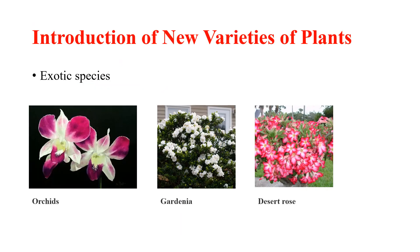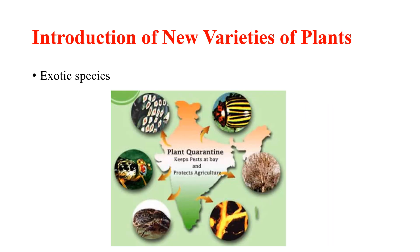The first step in plant breeding is introduction of new varieties of plants. It is a process of introducing high yielding varieties of plants from one place to another. Such plants are known as exotic species. Some of the exotic species introduced in India are orchids, gardenia, and desert rose. Some exotic species may carry pathogens and pests, so they are thoroughly tested in a plant quarantine before being introduced into the fields.